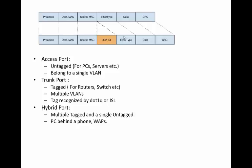To understand the concepts of access, trunk, tag, and untag, we have to go back to the fundamentals and look at the Ethernet packet. You have the destination MAC, the source MAC, a preamble, and an Ether type — which specifies whether it is an IP packet, ARP, or similar. Then there is the actual data and the CRC. The packet on top does not have any 802.1Q field associated with it.